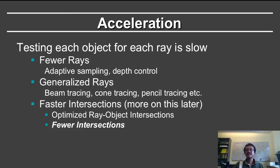Finally, one can consider faster intersections where one optimizes ray-object intersection, so ray-triangle intersections are very optimized. And this is where most of the acceleration work falls, one can have fewer intersections.